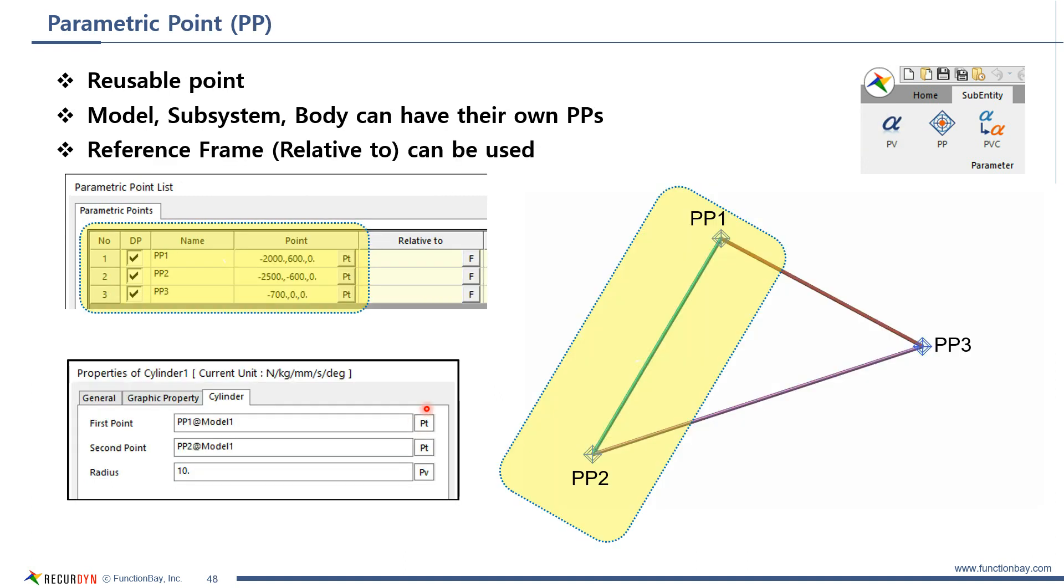Parametric point, PP, is similar to parametric value. The difference is that this is a vector. Parametric point is usually used to represent XYZ coordinates or directions.